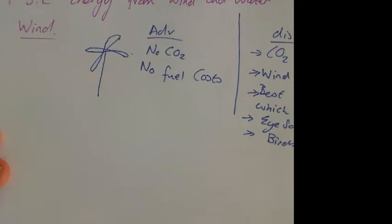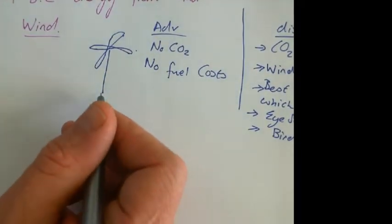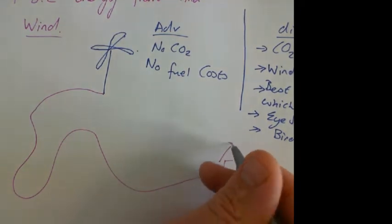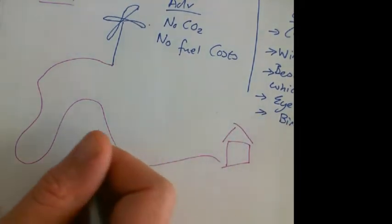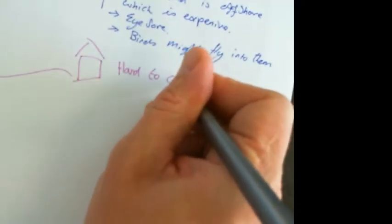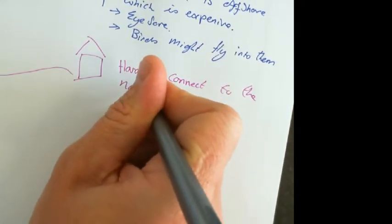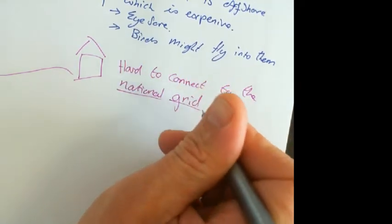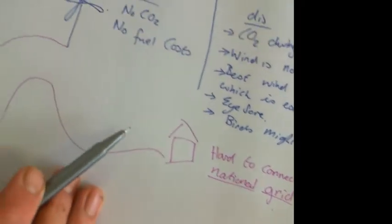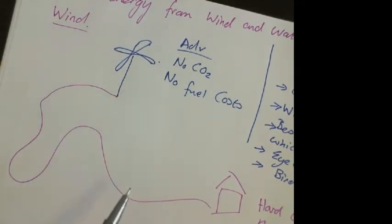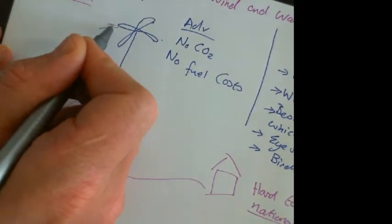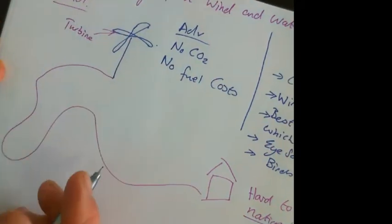If we look next, the other issue with wind is, if this is my wind turbine and it's in the middle of nowhere because that's somewhere where there's lots and lots of wind, I have then got to run a cable to get it to where I need it to go. So the other problem is that it's sometimes hard to connect to the grid. It's the national grid. The national grid is the way that, it's all the pylons and the cables that spread around the country, how we get energy around the country.